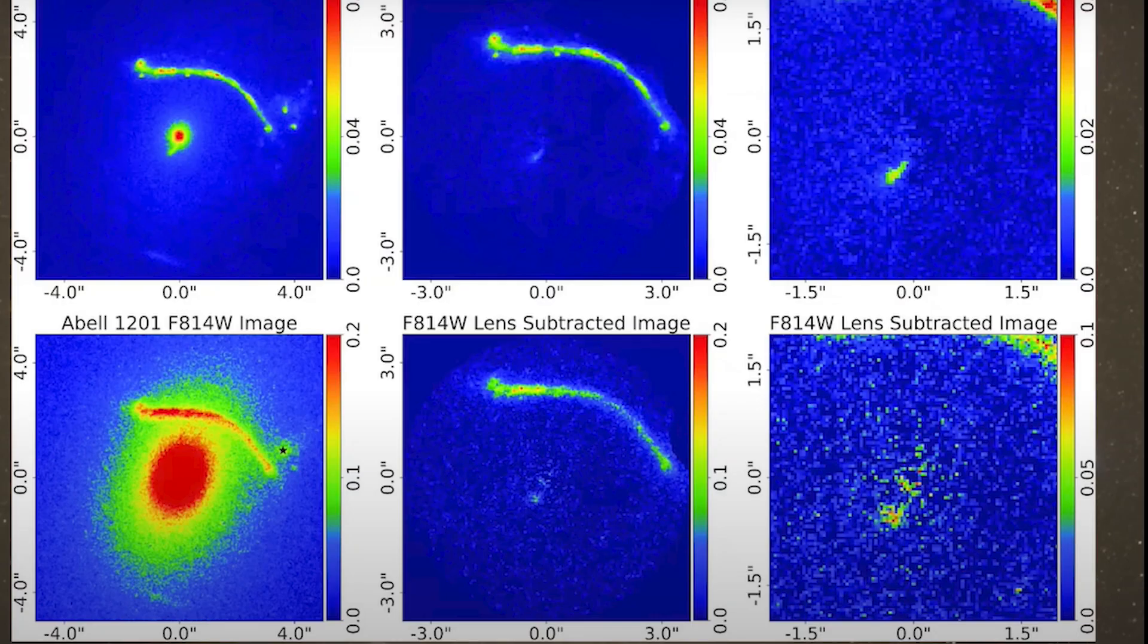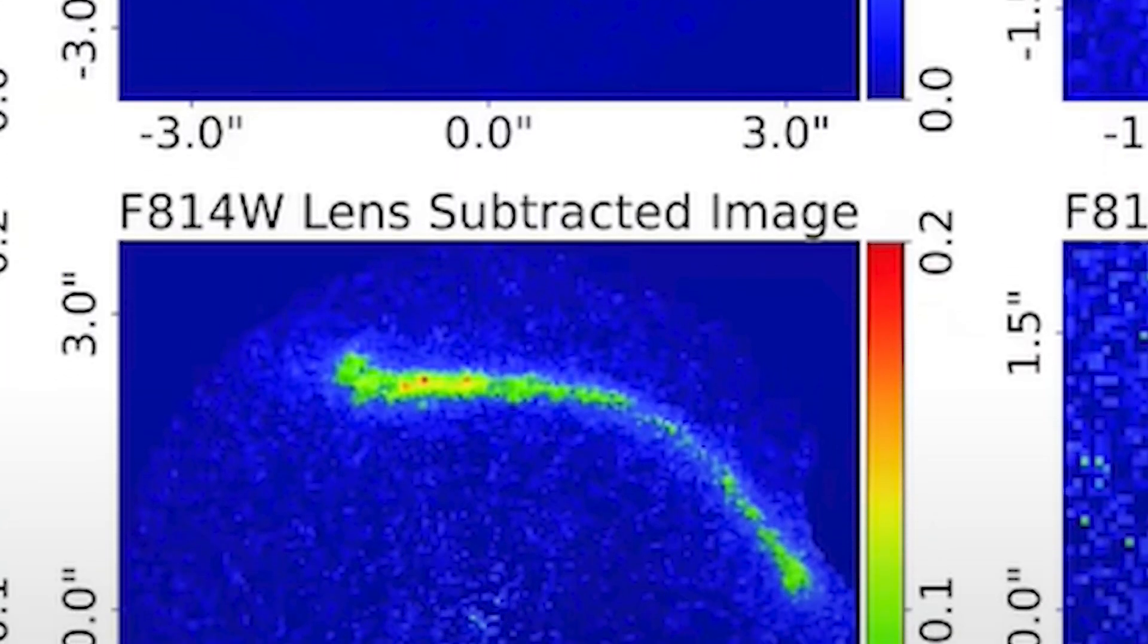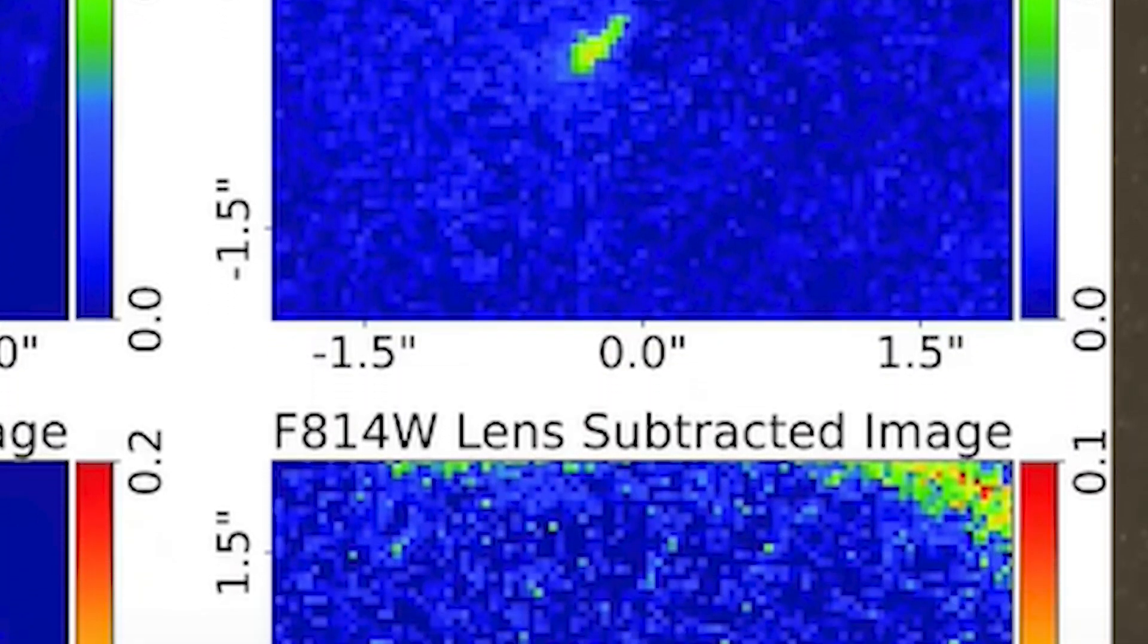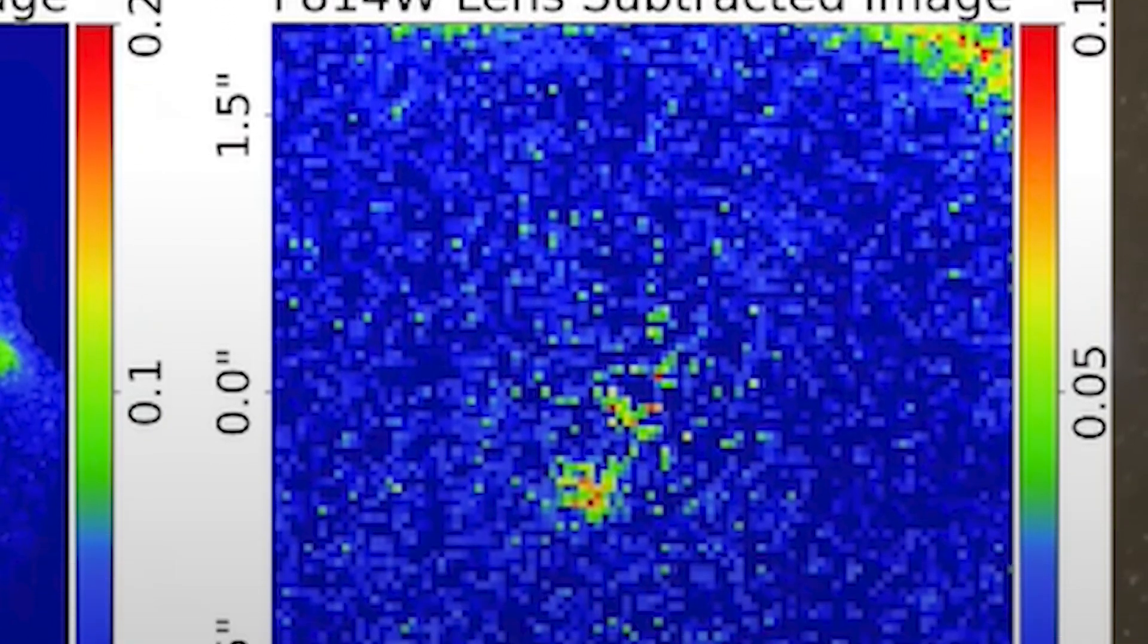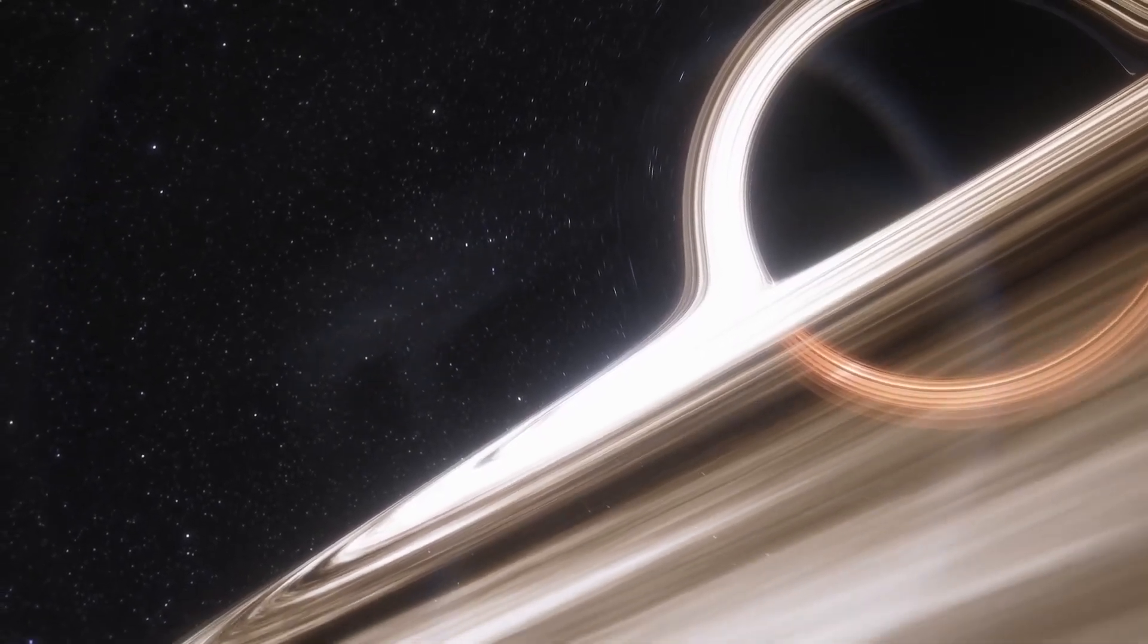Now look at the second column. The images in this column are the subtracted images in which the lensing galaxy is removed. Finally, look at the third column. It is a magnified version of the counter-images. This lies at the heart of their discovery of the ultra-massive black hole.